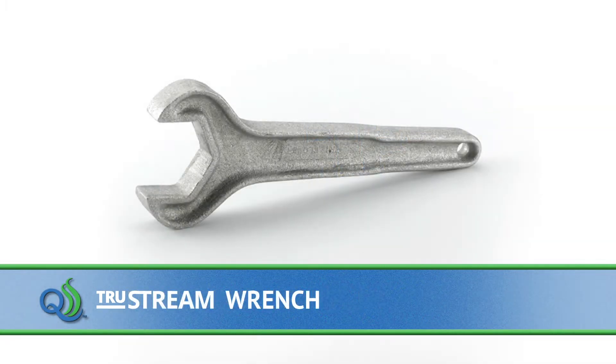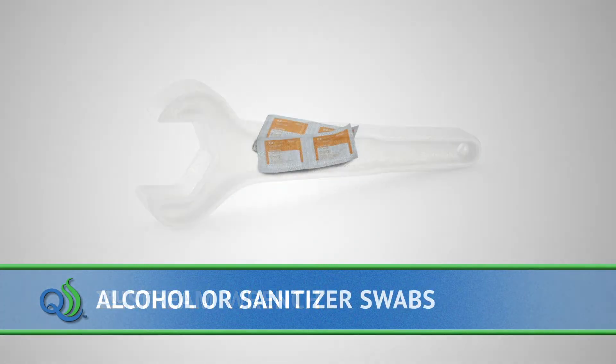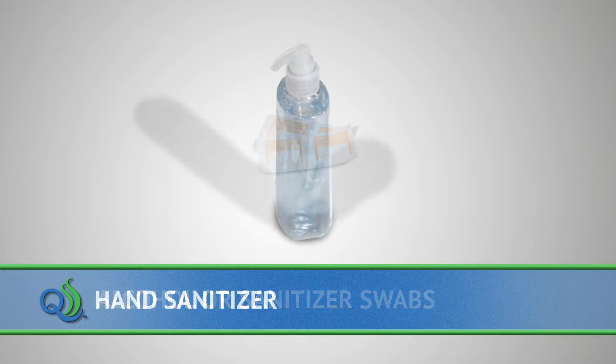A wrench for tightening the nut used to hold the septum in the QualiTrue port, alcohol or sanitizer for swabbing the inside of the stainless steel port and a separate swab for cleaning the surface of the QualiTrue sterile septum prior to needle insertion, and hand sanitizer to clean hands before sampling.